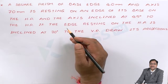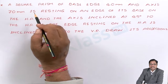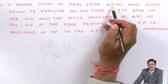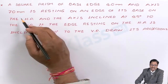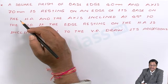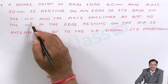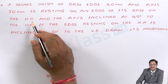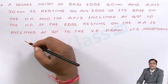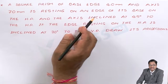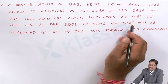By reading the problem, first try to understand what the object is. The object here is a square prism — a prism whose base has a square shape. The side length of each edge is 40 mm and the height of the prism is 70 mm. The resting condition is: resting on an edge of its base on the horizontal plane. Whenever resting in HP, the HP projection is initiated first, and the edge resting means HP is drawn perpendicular to the XY line. The axis is inclined at 45 degrees to the HP.